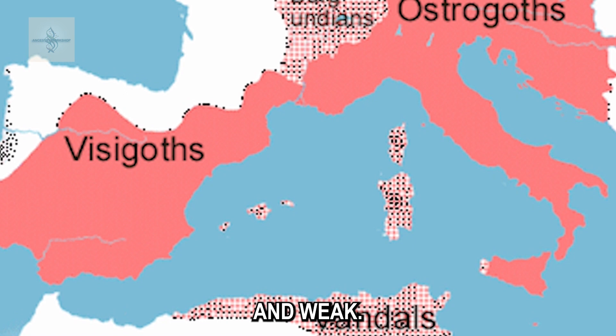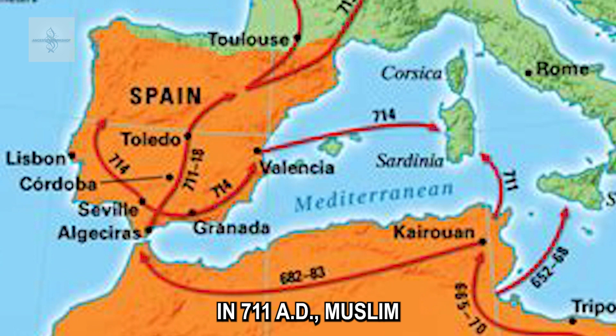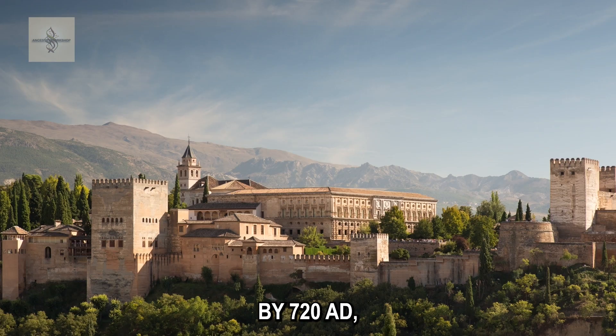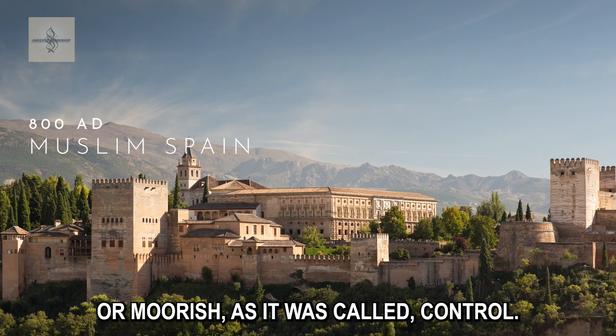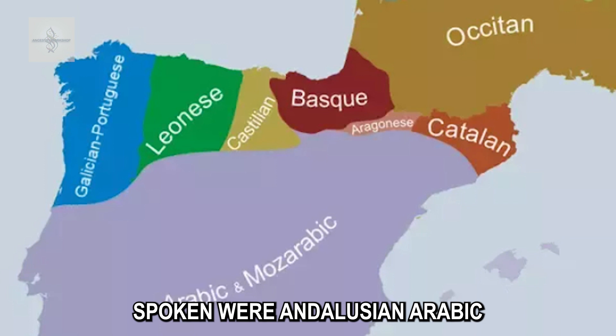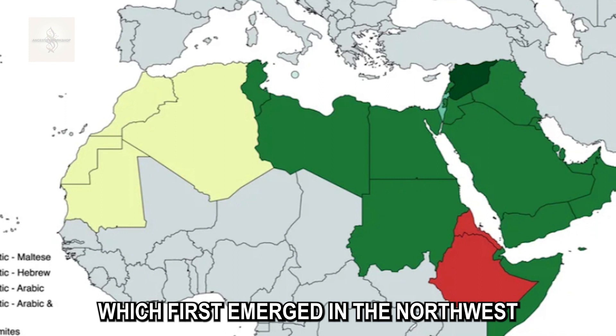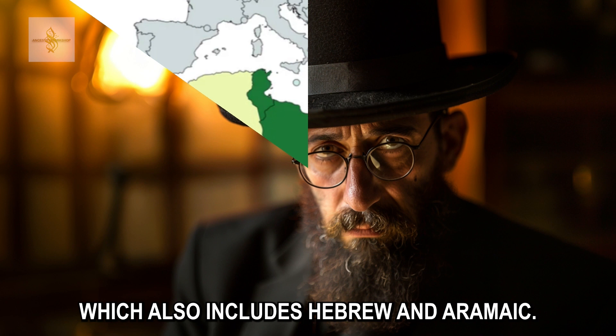Roman Christendom was fragmented and weak. Spain at the periphery was vulnerable to external invasions. In 711 AD, Muslim forces invaded and within seven years conquered the Iberian Peninsula, and it became one of the great Muslim civilizations. By 720, Spain was largely under Muslim — or Moorish — control. During this time period, the languages spoken were Andalusian Arabic and Mozarabic. Arabic, which first emerged in the northwest of the Arabian Peninsula, is a member of the Semitic family of languages, which also includes Hebrew and Aramaic.